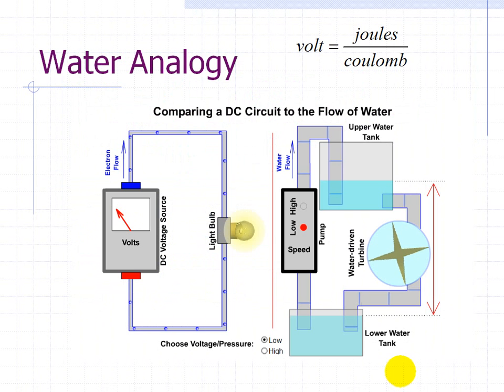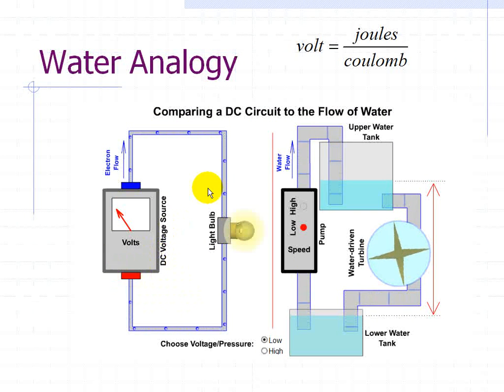What we have here is a water analogy where we want to compare a DC circuit to the flow of water. So here on the diagram on the left is a DC voltage source with an electron flow going in this direction from the minus blue terminal to the red terminal.